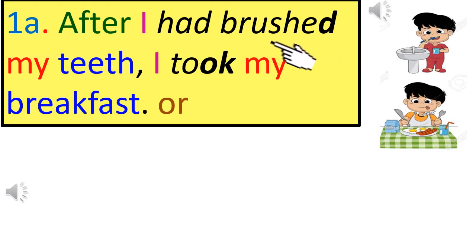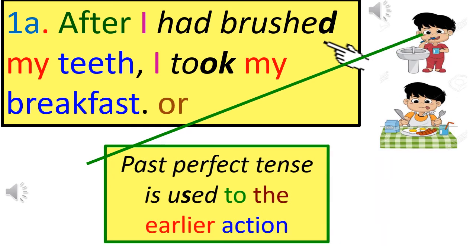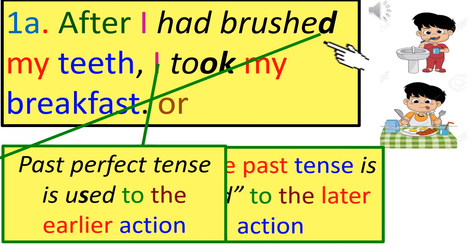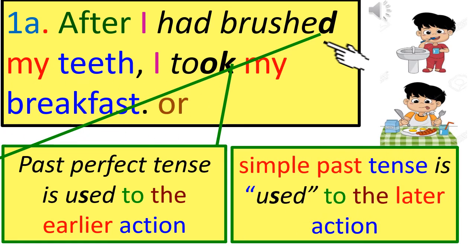As you can see, the action which occurred earlier is expressed in the Past Perfect Tense, whereas the action which occurred later is expressed in the Simple Past Tense. Past Perfect Tense is used for the earlier action; Simple Past Tense is used for the later action.